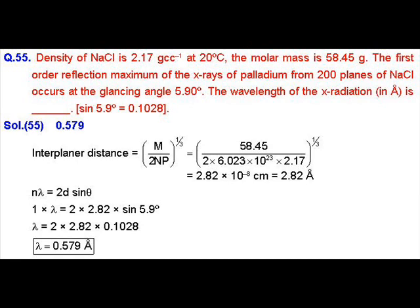In question 55, the density of Na₂CO₃ is given along with its molar mass. It is given that the first total reflection maximum for the X-rays from the 200 planes of the crystal occur at an angle of 5.9 degrees. We have to find out the wavelength of the X-ray radiation in angstrom.